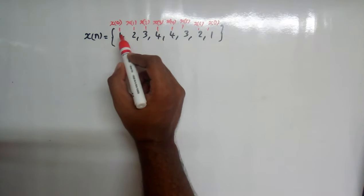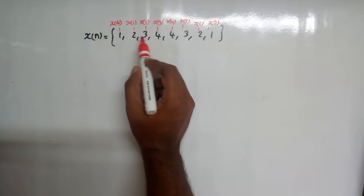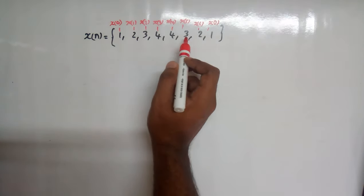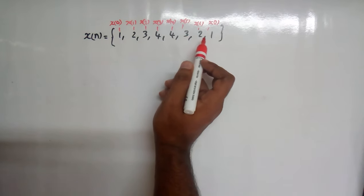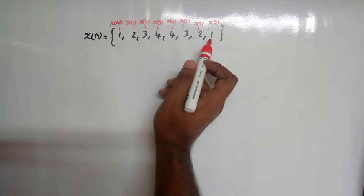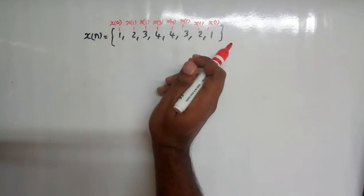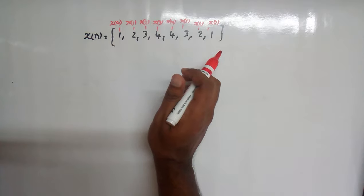We know this is x(0), x(1), x(2), x(3), x(4), x(5), x(6), and x(7). First of all, we need to do bit reversal for DIT-FFT.